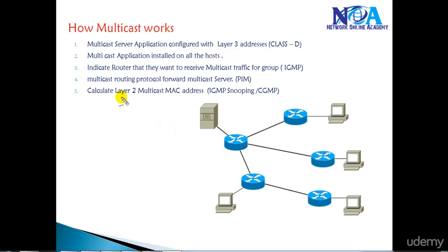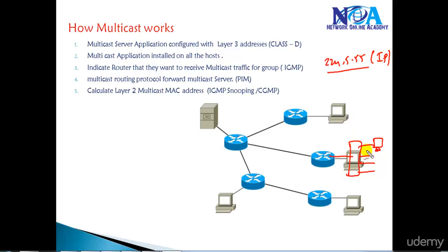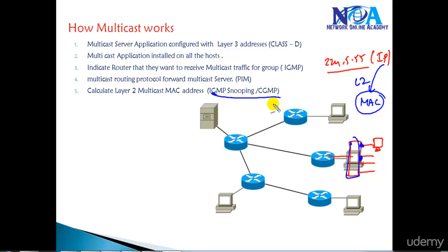There is also one more process that happens in the LAN where we are connecting a switch. The host that wants to receive multicast traffic sends information to the multicast group address based on IP addresses, but switches do not understand IP addressing. So the equivalent IP address has to be converted into equivalent multicast MAC addresses so that the switch can recognize on which ports the multicast traffic should go. We'll talk about this in our layer 2 multicast topics. Two protocols can be used to calculate the layer 2 multicast address: IGMP snooping and CGMP.